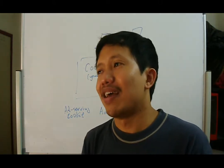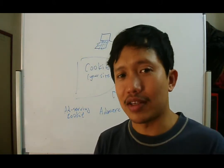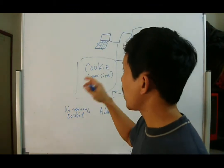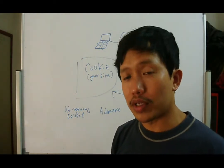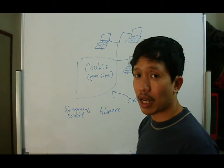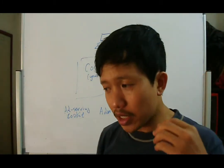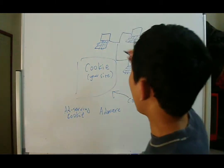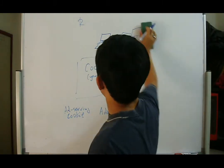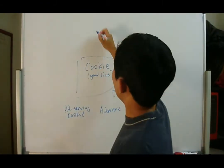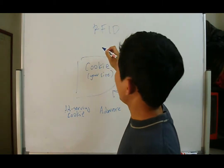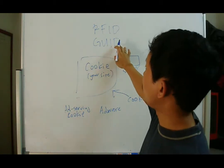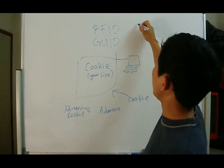For example, Facebook keeps track of your supposed close friends, so in your timeline you only see your close friends. So a cookie is one such technology that can erode privacy. There are actually three others we can discuss: Radio Frequency Identification (RFID), Global Unique Identifier, and Ubiquitous Computing.